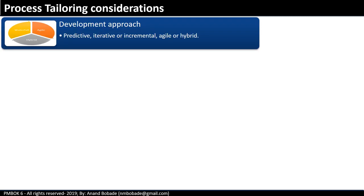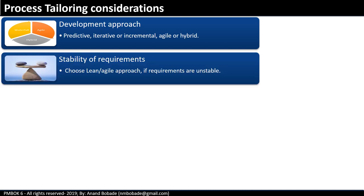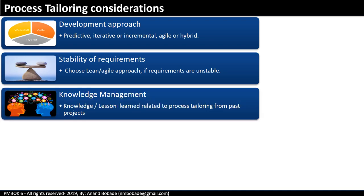Process tailoring considerations: some key areas that lead to process tailoring are — development approach: the project manager will define the development approach in the project management plan, which might be predictive, iterative, incremental, agile, or hybrid. Stability of requirements: the approach will be defined based on the stability of requirements; the project manager will choose a lean or agile approach if requirements are unstable.